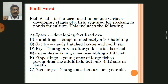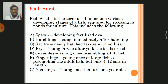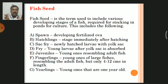Spawn is a developing fertilized egg. Hatchlings are the stage immediately after hatching — the young ones that come out from the eggs. Sac fry are the newly hatched larvae with a yolk sac. The yolk sac is a small bag-like structure connected to the mouth of the developing egg, containing reserve food material sufficient for three days. Fry are the young larvae after the yolk sac is absorbed.